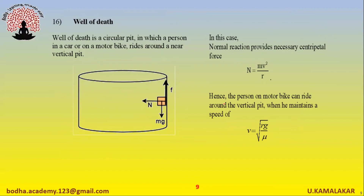The well of death is a circular pit in which a person in a car or on a motorbike rides around a near-vertical pit. In this case, normal reaction provides the necessary centripetal force: N equals mv squared divided by r. Hence the person or motorbike can ride around the vertical pit when maintaining a minimum speed of v equals the square root of (rg divided by mu).